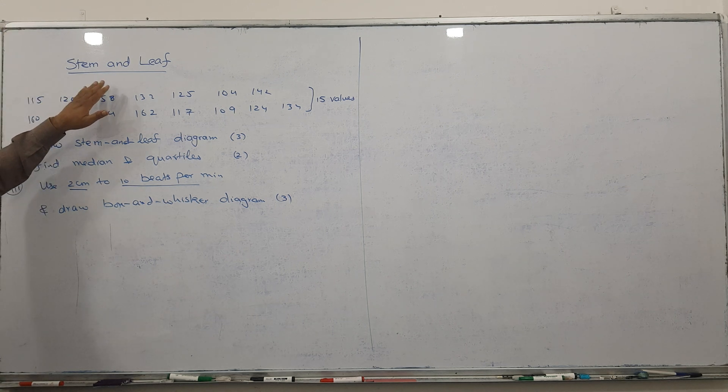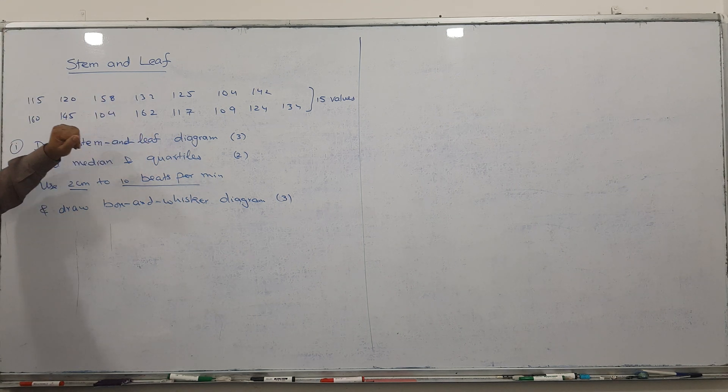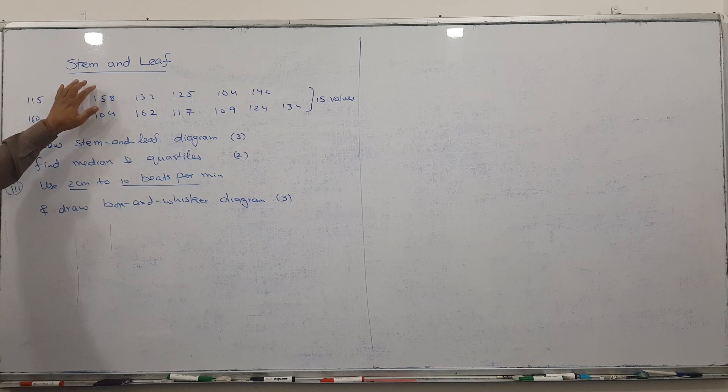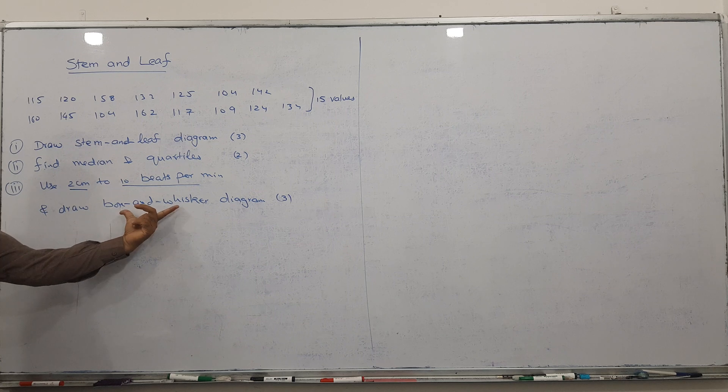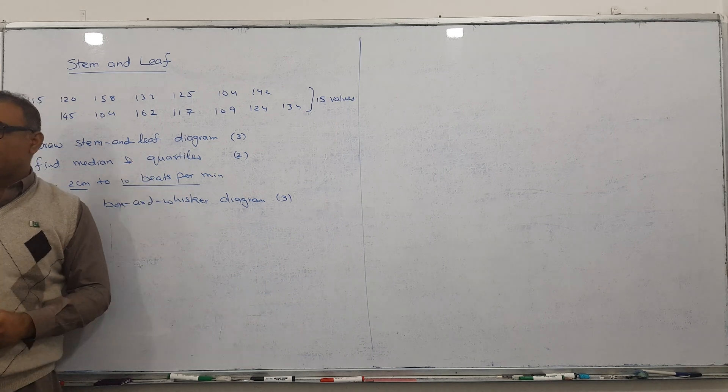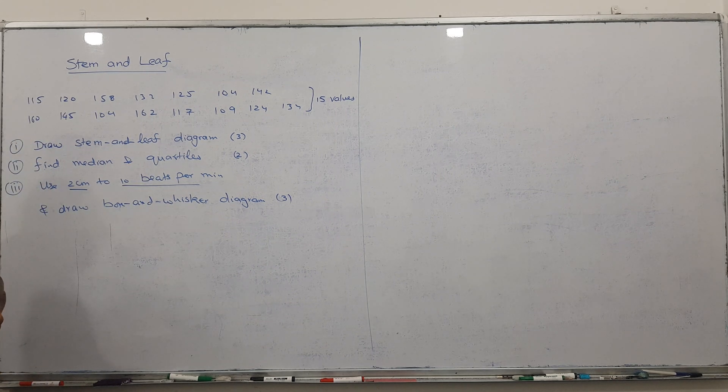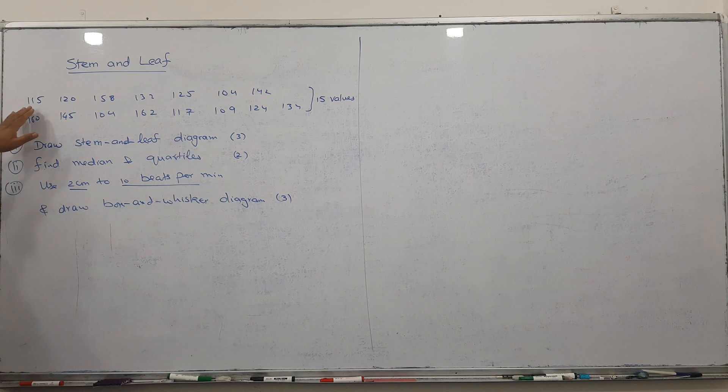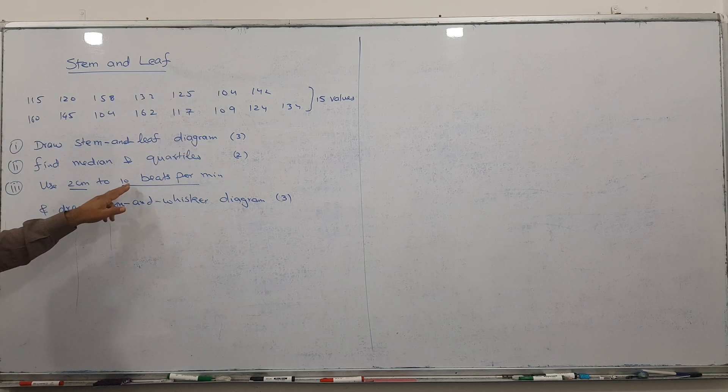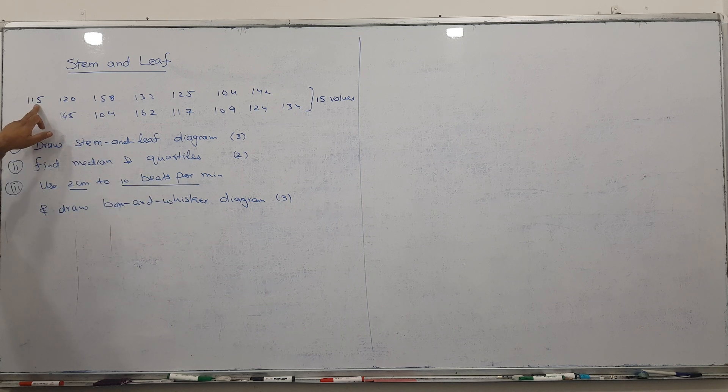Today's topic is from statistics - the newly added topic is stem-and-leaf diagram. We have two new topics: stem-and-leaf and box-and-whisker. These are newly added to our syllabus, so I'm going to discuss this 8-mark question. We have given some data values, beats per minute: 115, 120, and different given values. He's asking to draw the stem-and-leaf diagram.